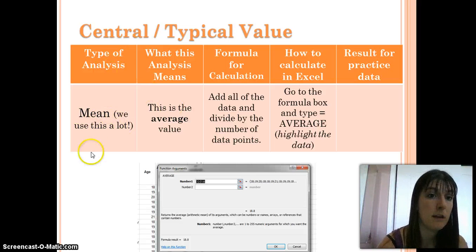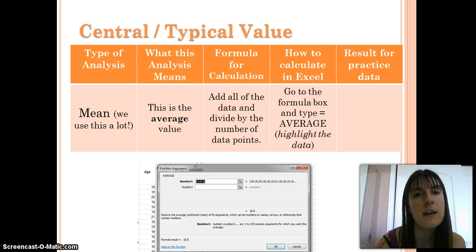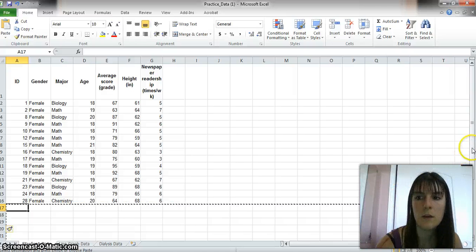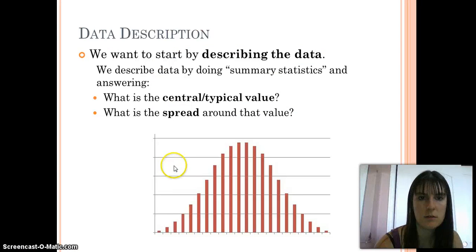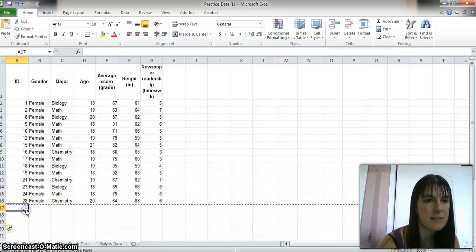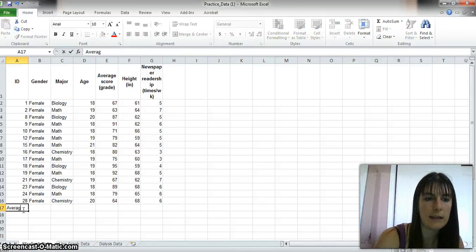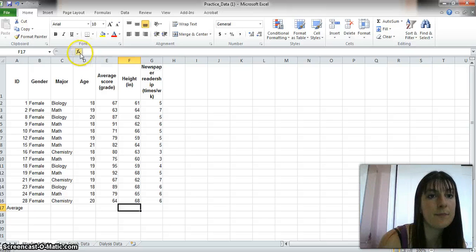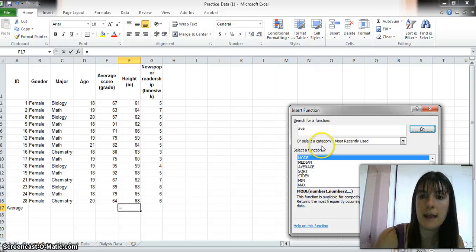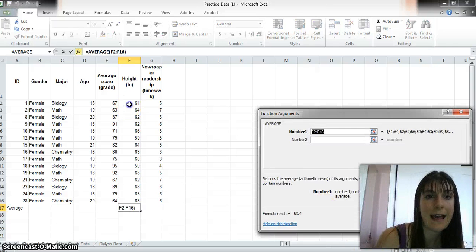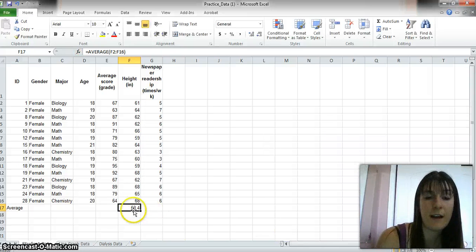First thing I want to do is find the mean. We're going to use this a ton. It's the average value. We add up all the data, divide by the number of data points, and we can use Excel to help us do that. I'll write the word average, then I'm going to use Excel to find it. I click on the FX part, type in average, it'll give me this average function. I click OK, highlight the data, and it'll find the average for me.